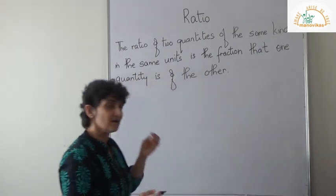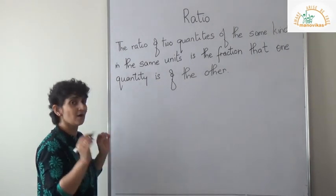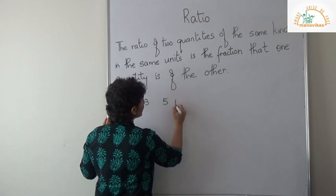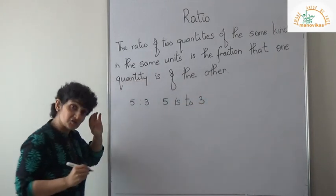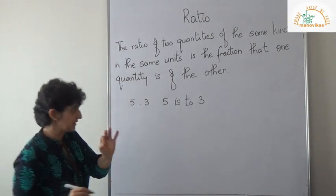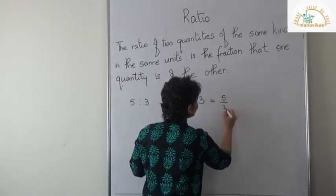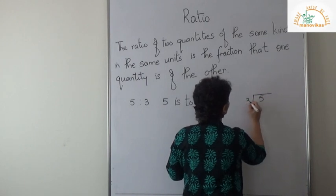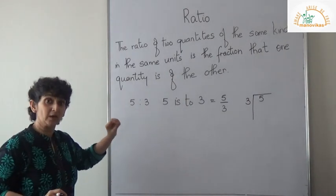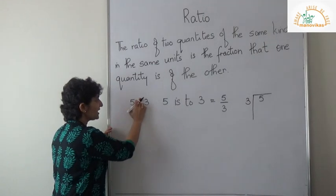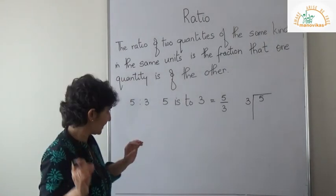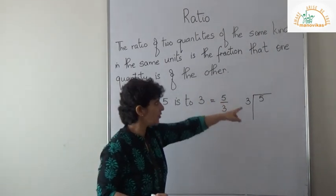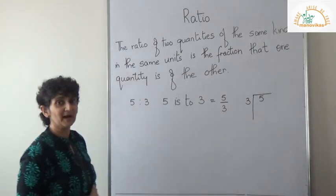Let's understand what a ratio is. For example, if I take 5 is to 3, how do I say this? '5 is to 3.' This also means 5 upon 3, and this also means when I divide — 5 divided by 3. So by now I'm sure you've understood what a ratio is. 5 is to 3 is how you put it in the form of a ratio, which also means 5 upon 3.